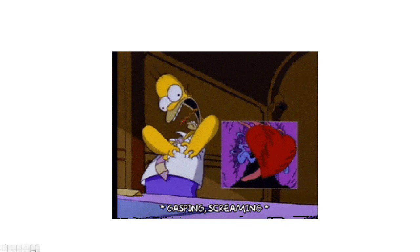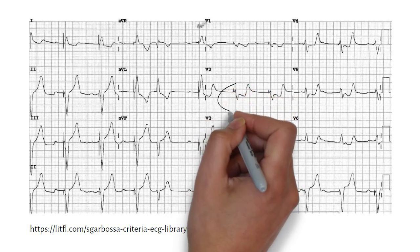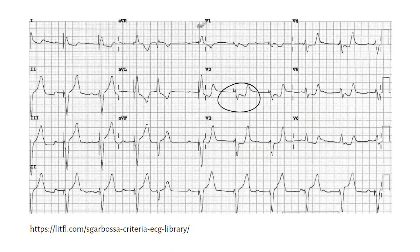He now presents to the emergency department with complaints of central chest pain radiating to his left arm and diaphoresis. This is his ECG now. Does he have myocardial infarction? Let's use the Sgarbossa criteria. We know that concordance is bad and excessive discordance is bad. Here we can see concordance in lead V2. So, based on the Sgarbossa criteria, he has myocardial infarction.